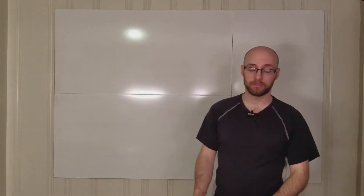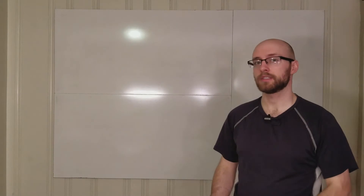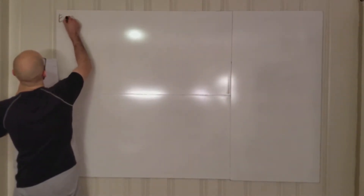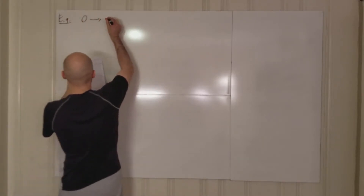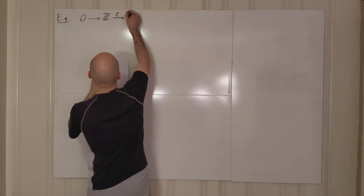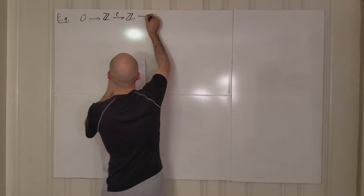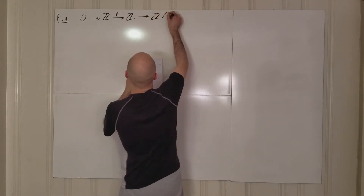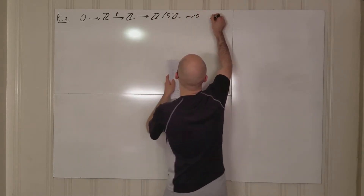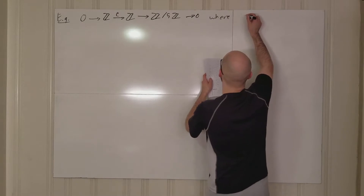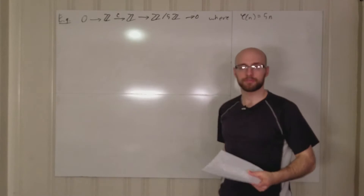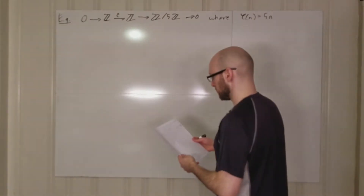Now that we've talked about a lot of things involving short exact sequences, let's look at some examples. Let's start with this one: zero going to the integers, going to the integers again, going to Z mod 5Z, going to zero, where phi of n is going to be 5n — so phi is multiplication by 5.